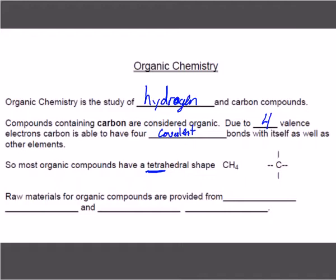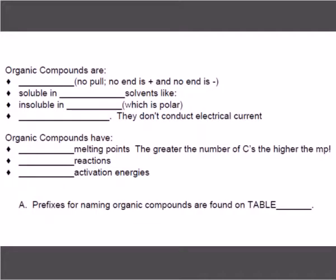Raw materials for organic compounds come from petroleum products. Petroleum oil and fossil fuels. We use organic molecules in everything. We're made of organic molecules. Medicines are all organic molecules. A lot of things are derived from petroleum, and then we undergo a series of reactions to get whatever you're trying to make.